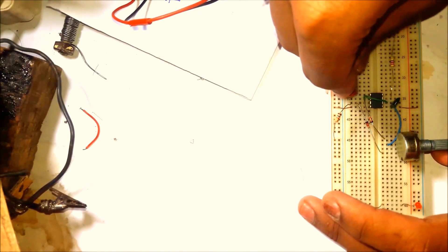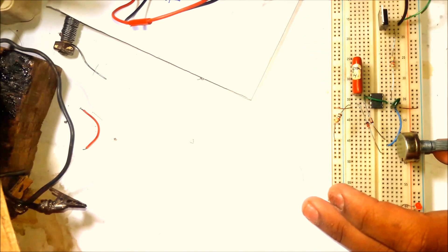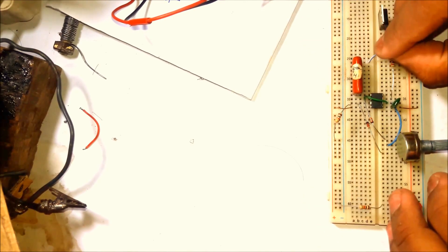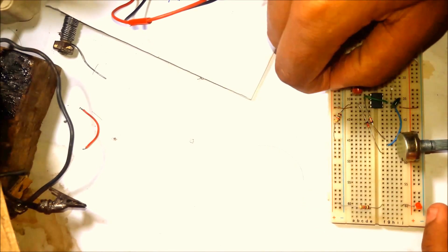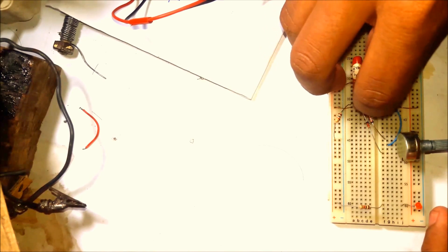Now set the 0.01 microfarad capacitor from pin 5 to the ground. Connect pin 4 of the IC to the VCC rail to avoid reset.